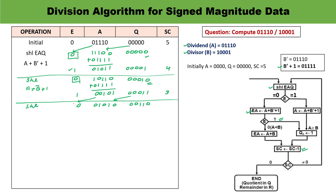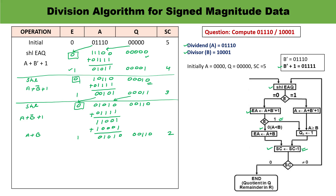Check E — it is 0, so add B̄+1 into A. B̄+1 is 01111. After addition, E remains 0, meaning A is less than B — no carry generated. So we must add B back into A. Adding B (10001) restores the value and generates E=1. Q remains 00110, and the sequence counter decrements to 2.